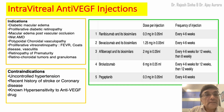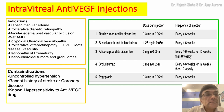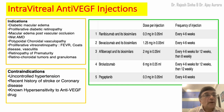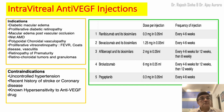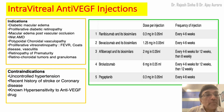Intravitreal injections of anti-VEGF agents include Avastin or Bevacizumab, Ranibizumab, Aflibercept, Brolucizumab, and Faricimab. The indications are multiple: diabetic macular edema, proliferative diabetic retinopathy, macular edema from branch or central retinal vein occlusions, wet age-related macular degeneration, PCV, cases of ROP, and retinochoroidal tumors and granulomas.